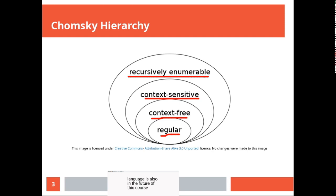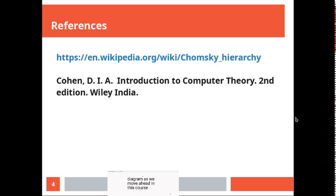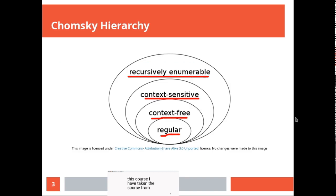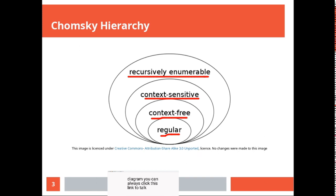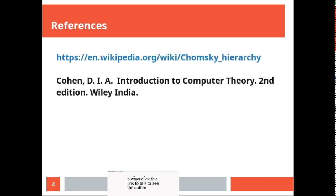We will keep referring to this Chomsky hierarchy diagram as we move ahead in this course. The diagram is sourced from Wikipedia under a Creative Commons attribution license. References are also taken from Daniel Cohen's Introduction to Computer Theory, second edition.